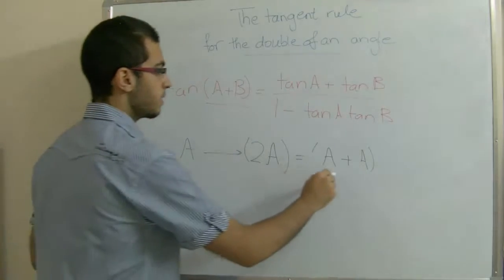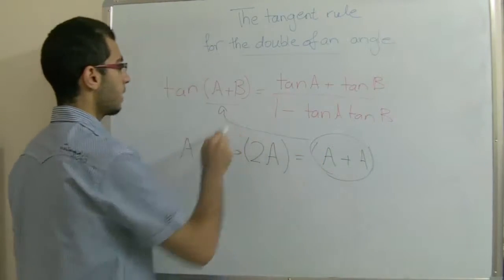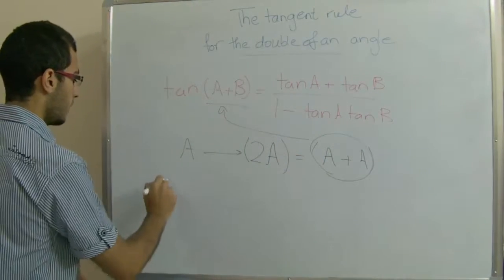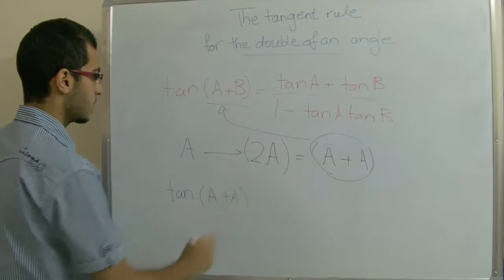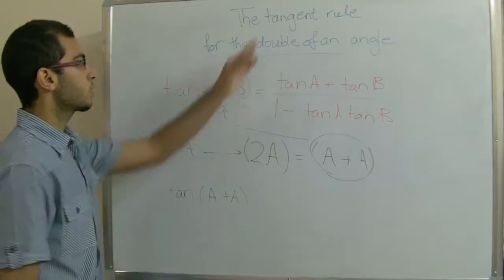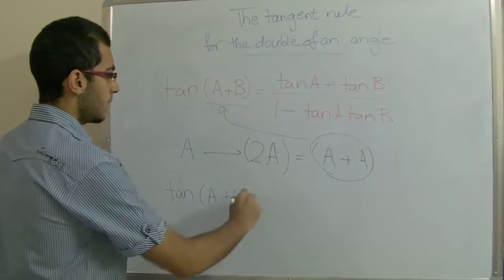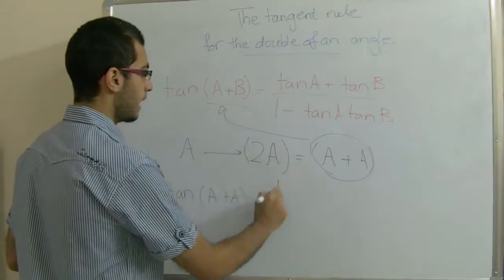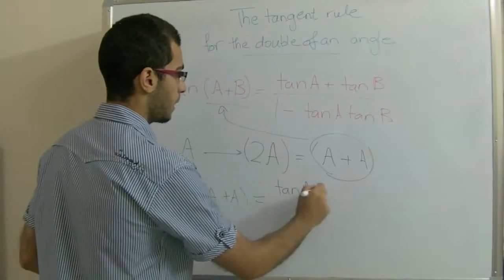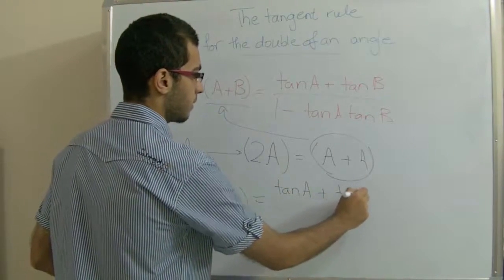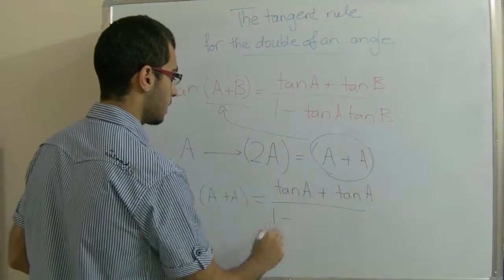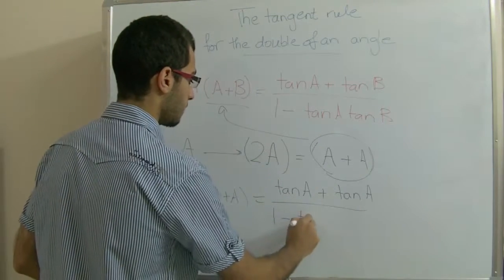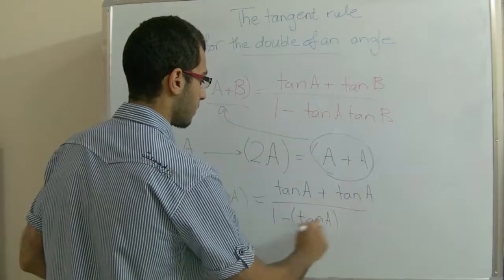We substitute with this in this formula in here. We can get the rule as tan(A+A), which is tan 2A, the tangent rule for the double of an angle, equals tan A plus tan A over 1 negative tan A by tan A.